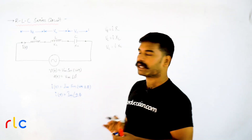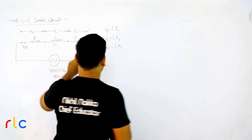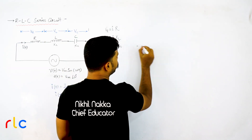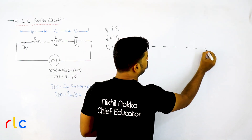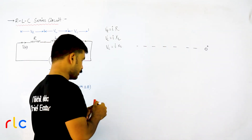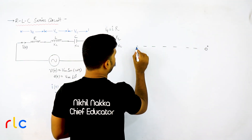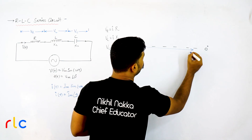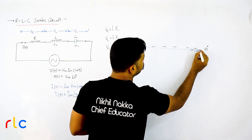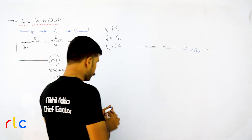Now I will make a vector diagram. Since current is common to all three elements, I will take current as the reference vector. This is the reference baseline — I will place the current vector here at zero degrees.